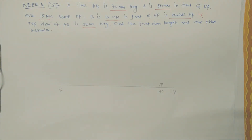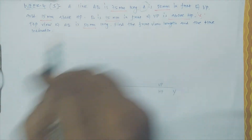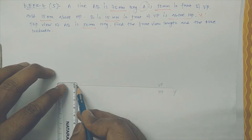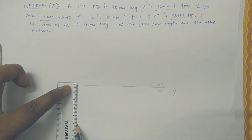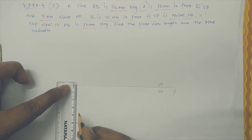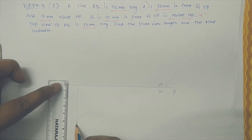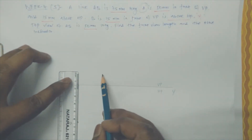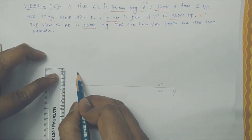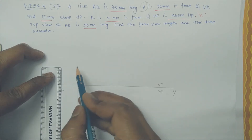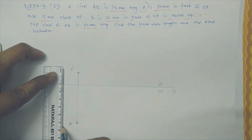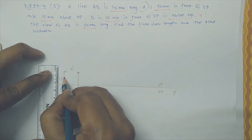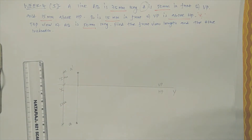The problem clearly specifies point A: it is 50mm in front of VP, so you can see it in the HP. Let me mark point A here. It is also 15mm above HP, so I mark 15mm here — that gives us point A-dash. Mark them side by side. This distance is 50mm and this distance is 15mm. Make the dimensions properly.